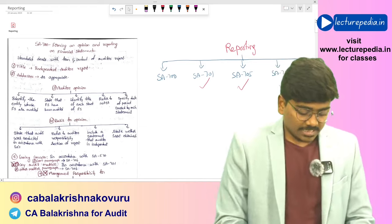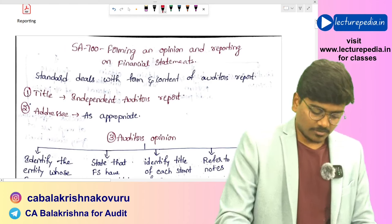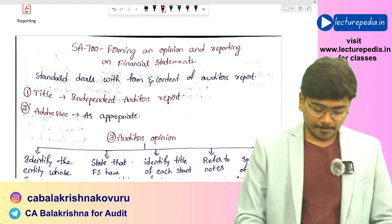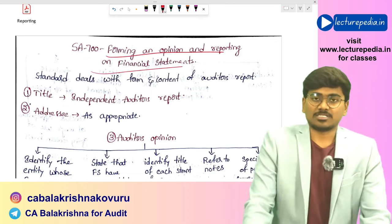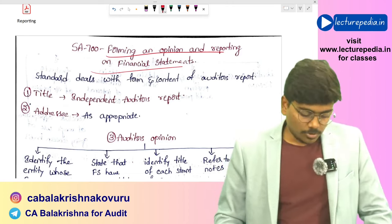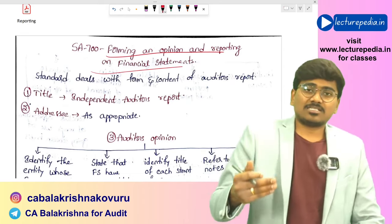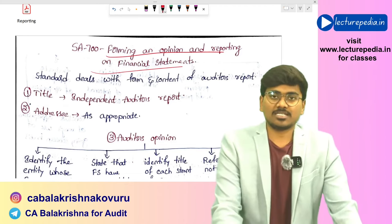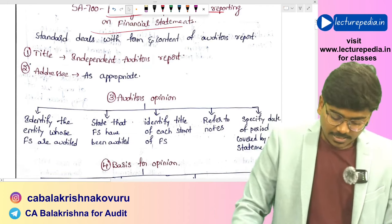Let us start with SA 700, which is the basic standard dealing with the format of the audit report — SA 700: Forming an Opinion and Reporting on the Financial Statements. First, in the audit report you will give the title as 'Independent Auditor's Report,' and next you will have the addressee — to whom the report is addressed. Generally in case of companies, it will be addressed to the shareholders.